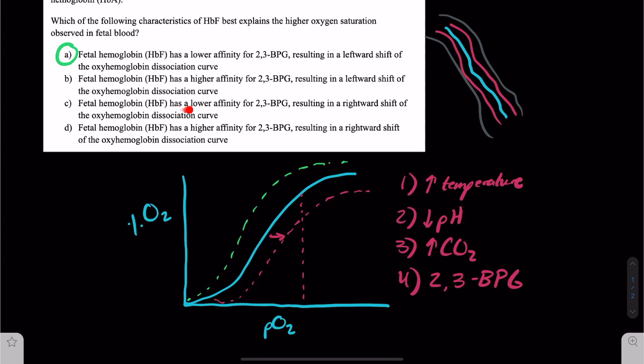C, fetal hemoglobin has a lower affinity for 2,3-BPG resulting in a rightward shift of the oxyhemoglobin association curve. Again, this can't be correct because if we have decreased 2,3-BPG, something that causes a rightward shift, that means it should be shifting left and that's not the case in C. So we can eliminate C as well.